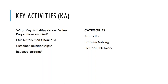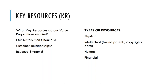The key activities block covers what key activities our value propositions require — what we need to do in order to make the value proposition a reality. We're also talking about key activities in terms of distribution channels, customer relationships, and revenue streams — the stuff we need to do in order to get things done. Different categories include production, problem solving, or platform and network activities. This is basically the activities we need to carry out in order to make the business a reality.